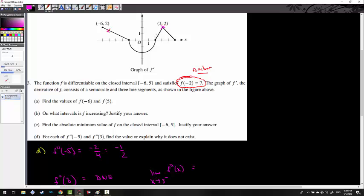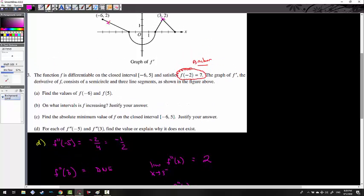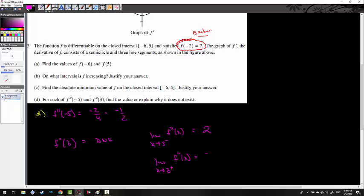So what is the slope heading into 3 from the left? Well, that's going to be up 2 and to the right by 1. So that's going to be 2 right there. And then as you approach 3 from the right, your slope value is going to be down 2 to the right by 2. So -2 over 2, which is -1. So that would be enough justification right there. You could say the limit as x goes to 3 of f''(x) does not exist. Therefore, f''(3) does not exist.